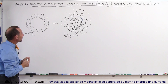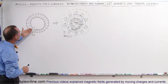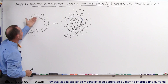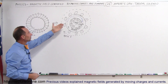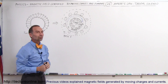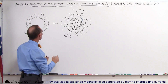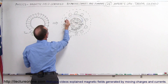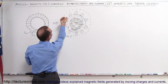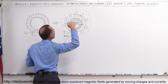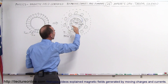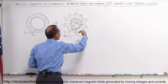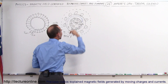We've taken the toroidal solenoid and sliced it in half so we can look at it from this direction. Notice that on the outside the current comes out of the board, and on the inside the current goes into the board, so the current goes around like that.